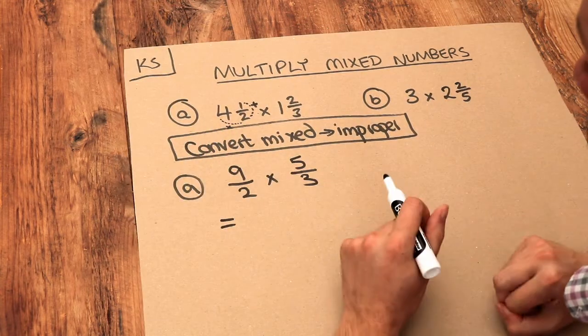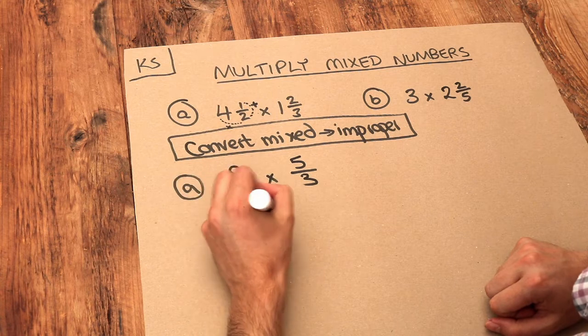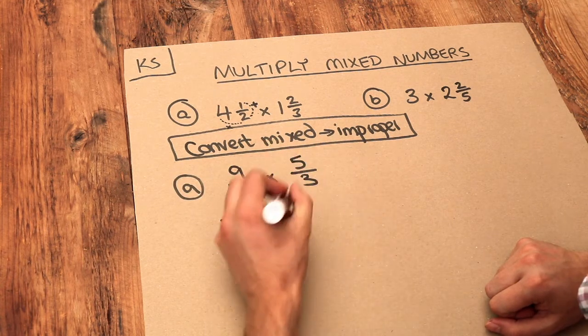Then we can multiply these like normal fractions. We multiply the numerators together: nine times five is 45. We multiply the denominators together: two times three is six.